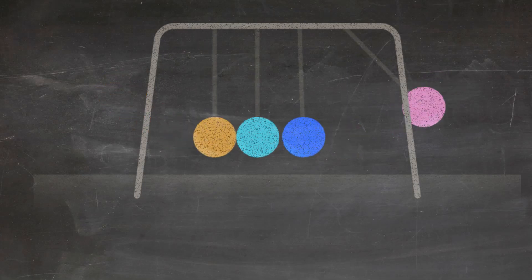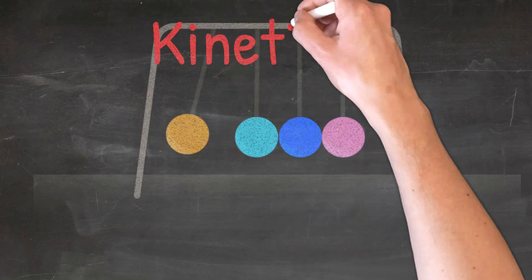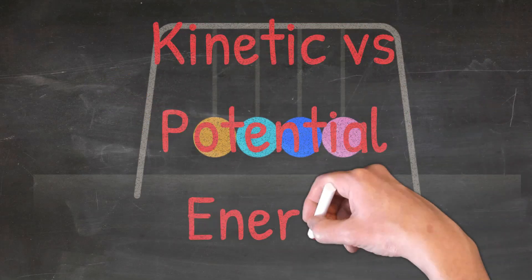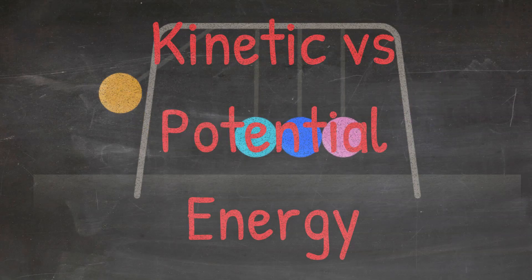Energy is all around us. Without energy, we wouldn't be able to get anything done. In this video, we are going to look at the difference between kinetic and potential energy and how to identify what type of energy an object has.